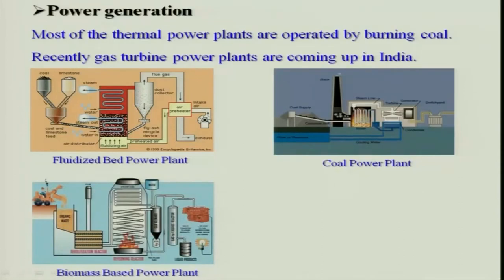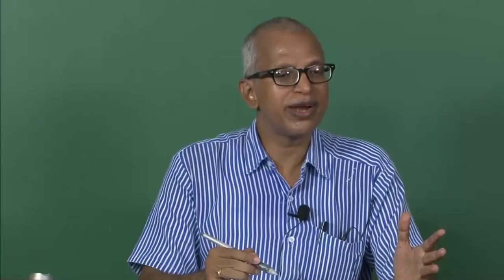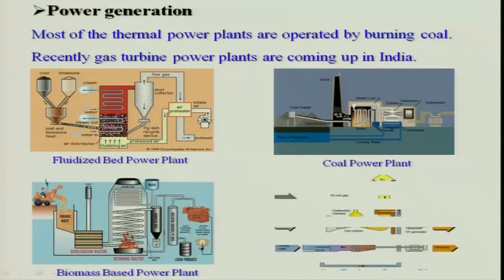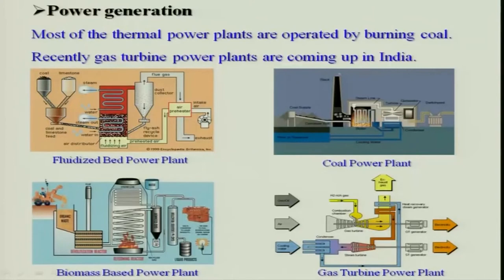There is also a biomass-based power plant, which is coming up well. Indian coal contains a large amount of ash — that is a very big challenge, and for that fluidized bed technology is required. Using a hybrid combination of coal and biomass together, you can overcome that problem. Biomass is another way of generating power in a boiler. There is also the gas turbine power plant, and you can combine this into a combined cycle to enhance efficiency and reduce emissions.